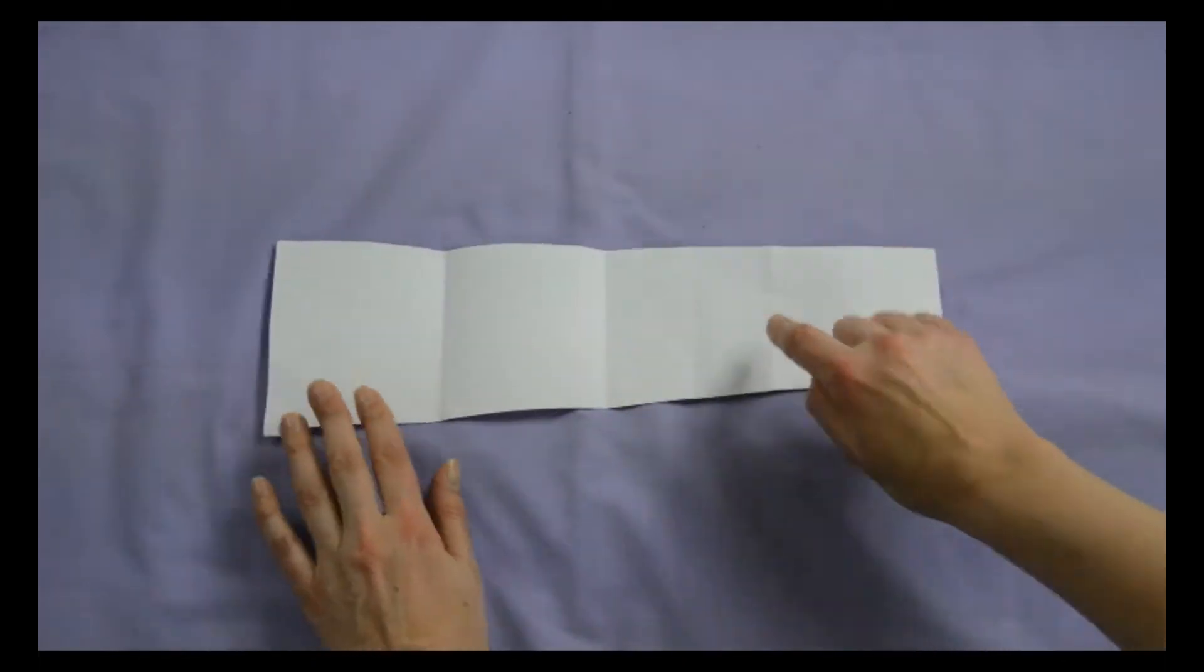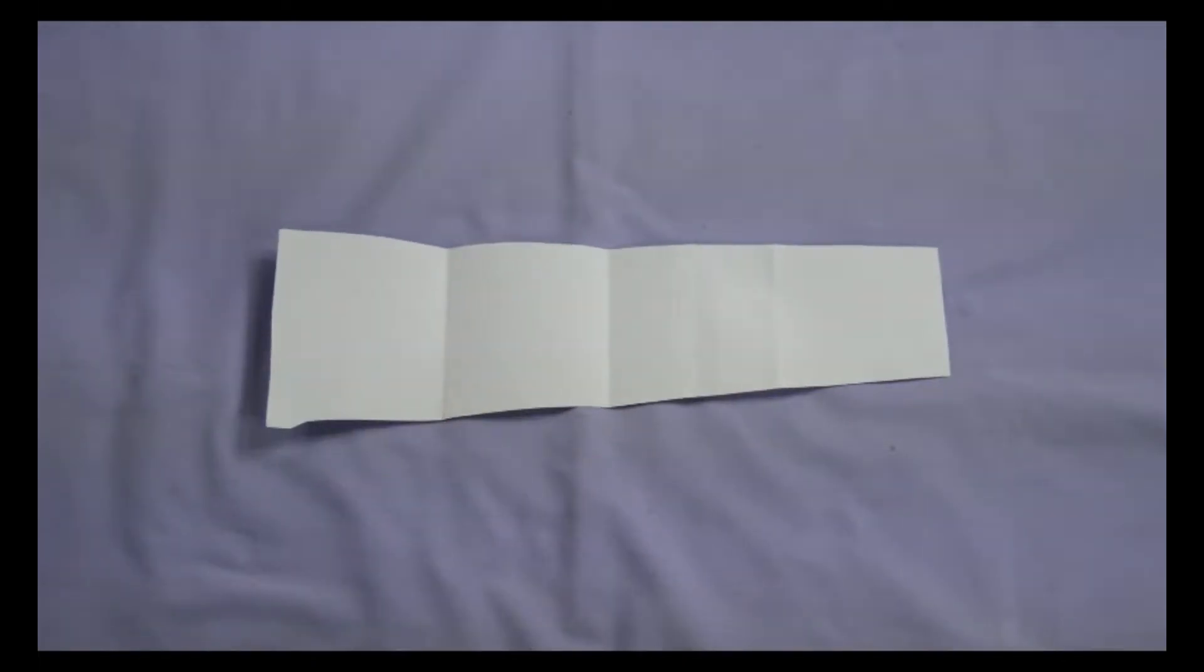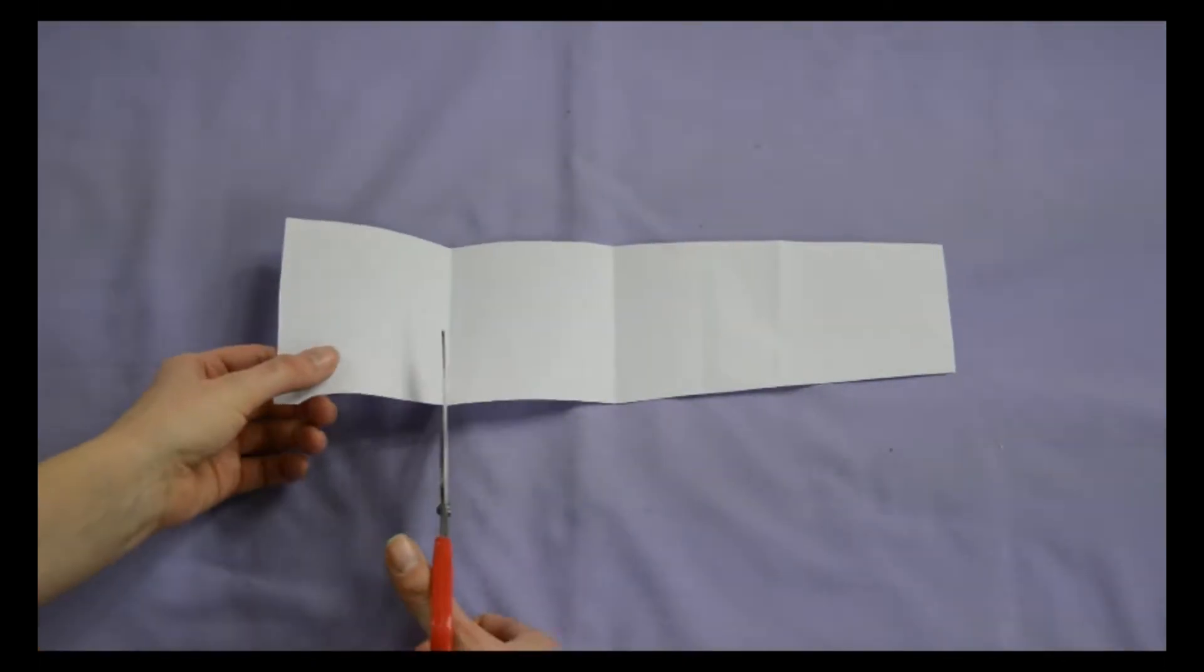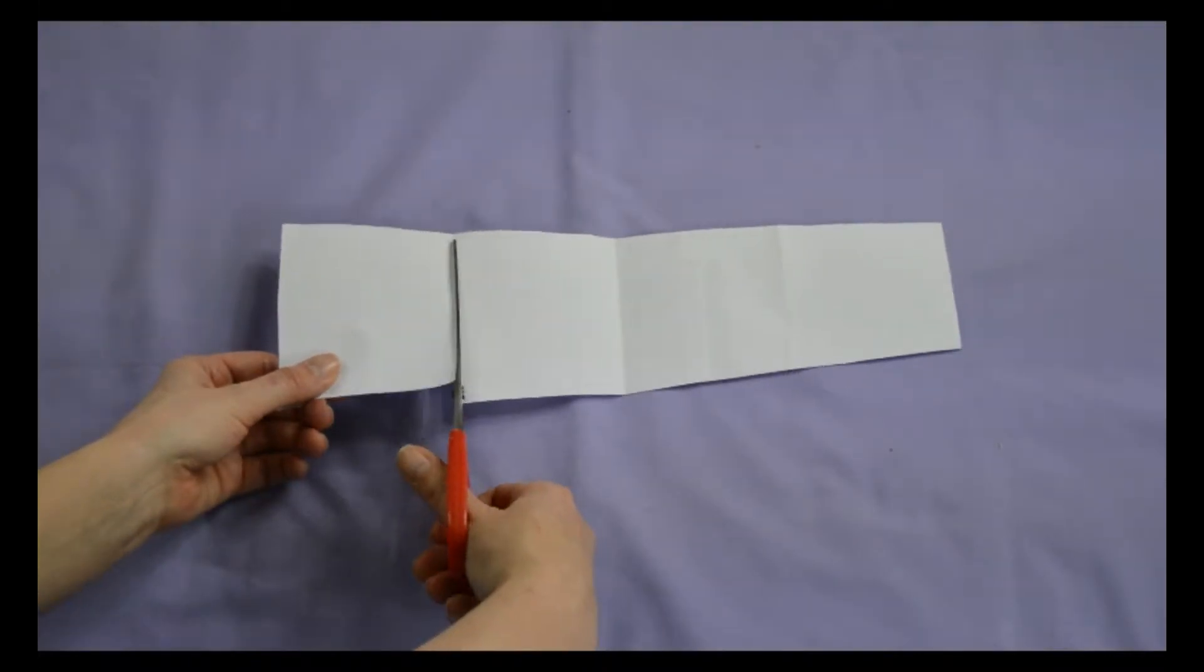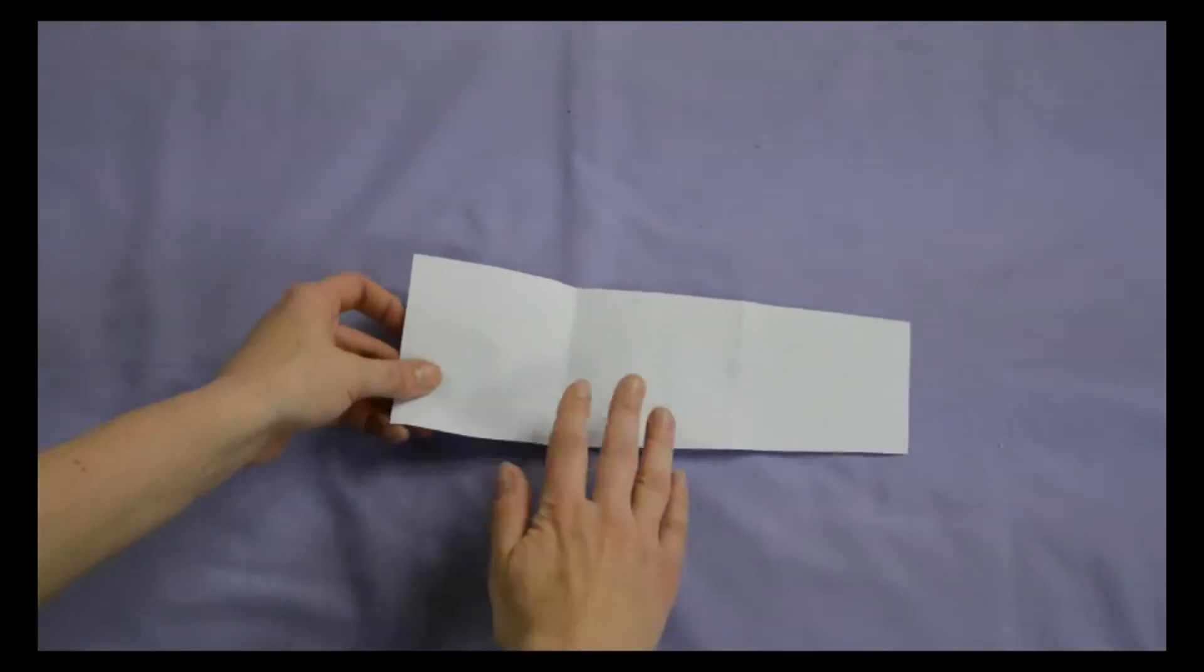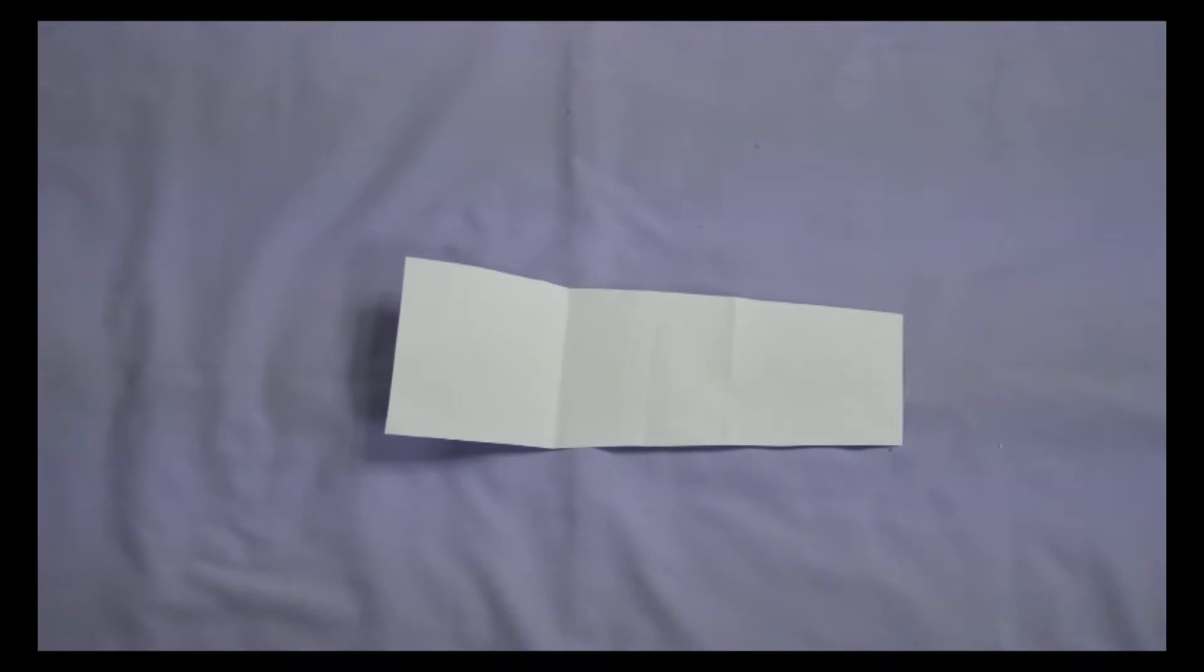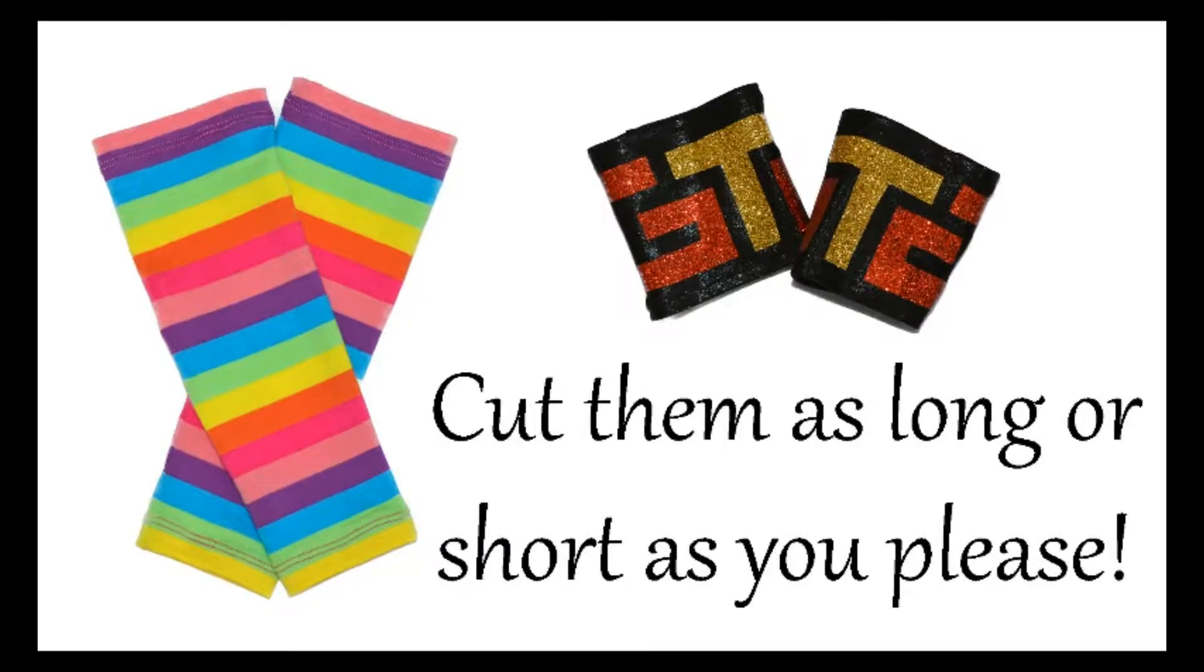I cut the pattern at the first fold for superhero cuffs and at the third fold for long arm warmers. Today I am making arm warmers, so I will cut along the third fold. Of course, you can cut your pattern to any length you would like. Just remember you will lose approximately 1.5 centimeters or half an inch at each end when you turn up the hem.